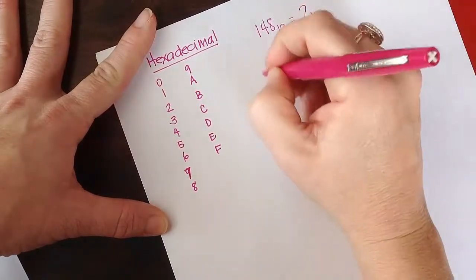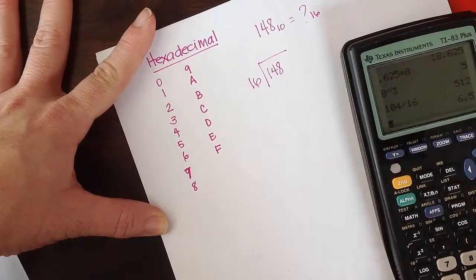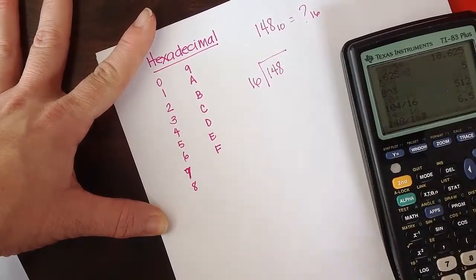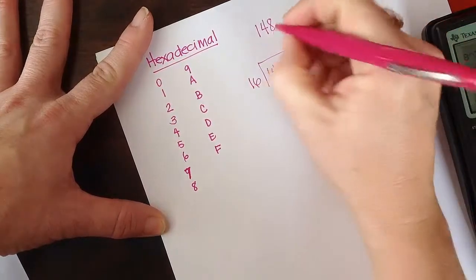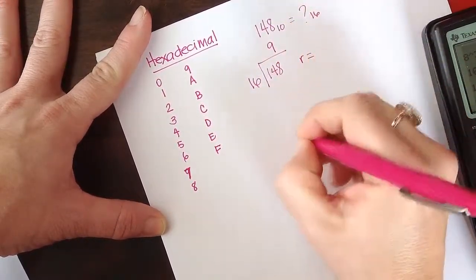We're going to divide by 16, which is the base. So 148 divided by 16, 9.25. So 0.25 is going to be a remainder of 4.